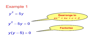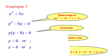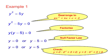Notice that this will factorise into y brackets y minus 5. Now we have the form m times n equals 0: y times y minus 5 equals 0. So we can use the null factor law, where y equals 0 or y minus 5 equals 0, from which y equals 0 or y equals 5.